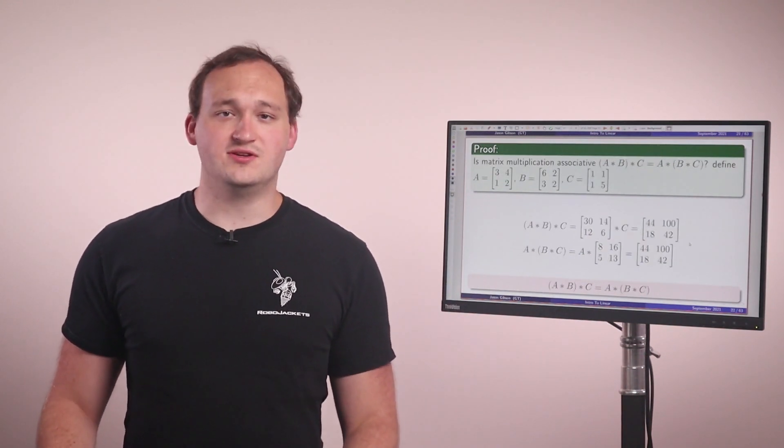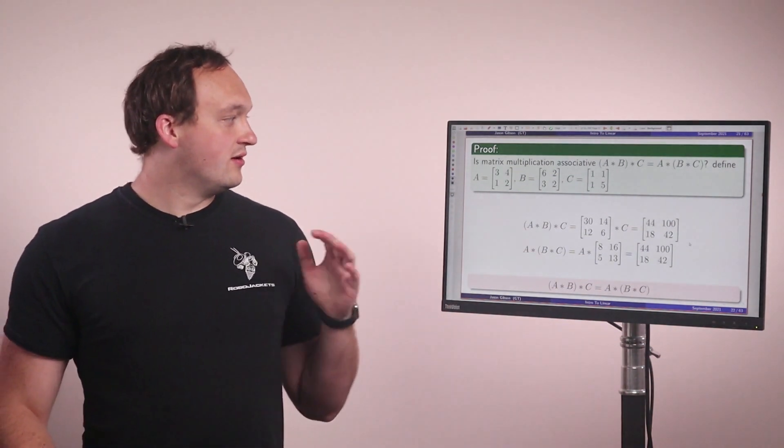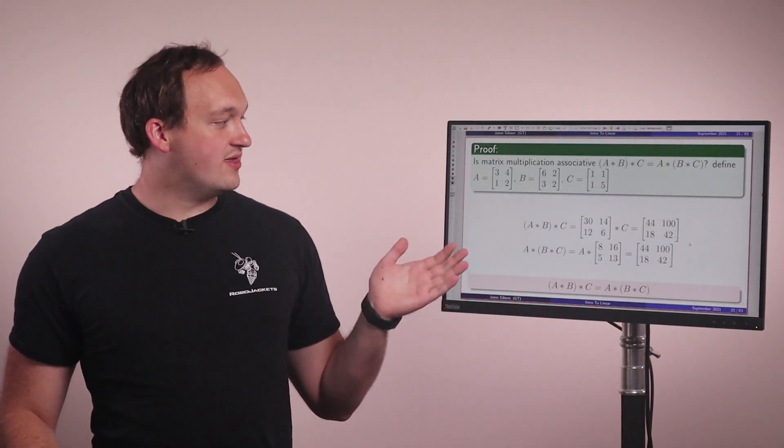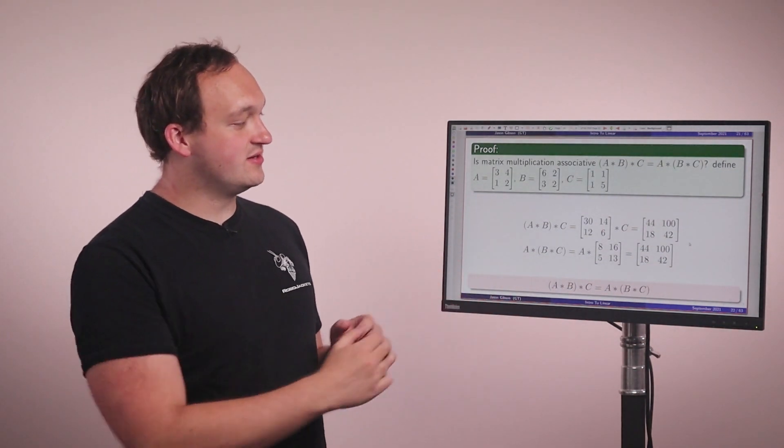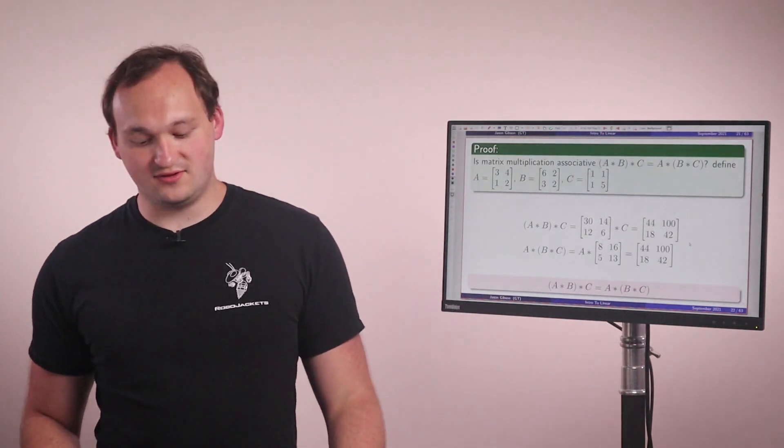The second property of matrix multiplication is, is it associative? And the answer is yes. So if we take three matrices, A times B times C, and then we apply our parentheses in different places, what we end up with is the exact same matrix. So matrix multiplication is associative.